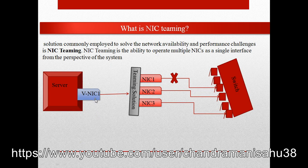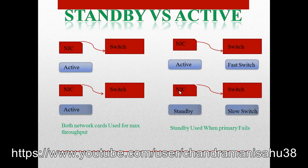Here is my server with a virtual NIC. There are three NIC cards connected to a switch — this is called the teaming solution. What the teaming solution does is: if one NIC goes down, the second takes over; if the second goes down, the third takes over. So there is no chance of losing connectivity in our environment.